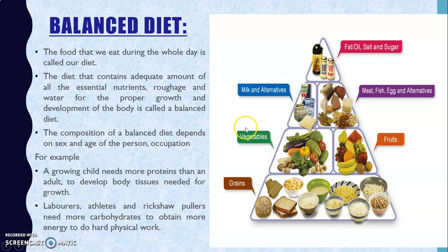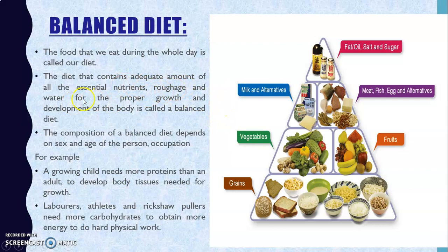The balanced diet is the diet that contains all the nutrients, water, and roughage in proper amounts. The food that we eat during the whole day is called our diet. The diet that contains adequate amounts of all essential nutrients, roughage, and water for proper growth and development of the body is called the balanced diet.